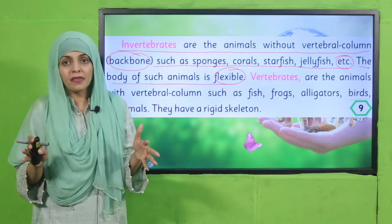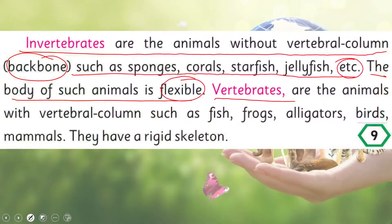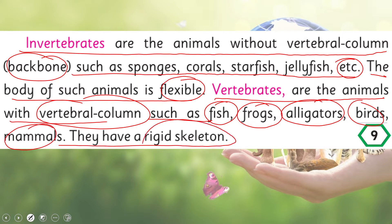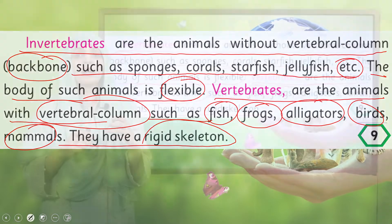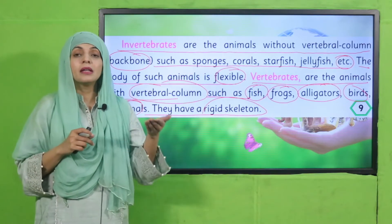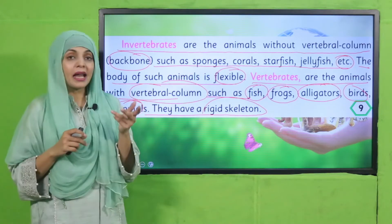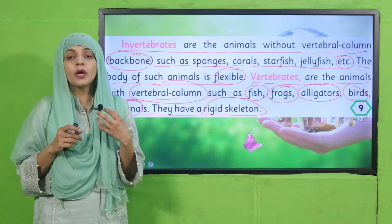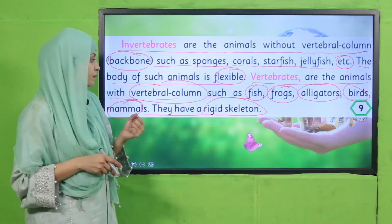Vertebrates are animals with a vertebral column, such as fish, frogs, alligators, birds, and mammals. They have a rigid skeleton. Examples include frogs, crocodiles, lizards, snakes, birds, alligators, and mammals like cows and goats — these are all vertebrates.